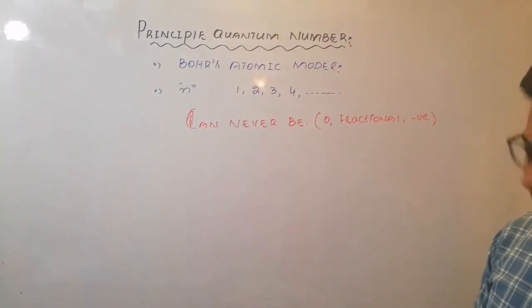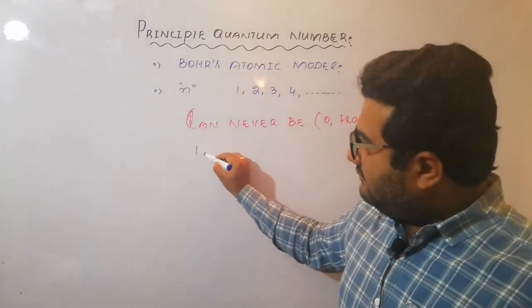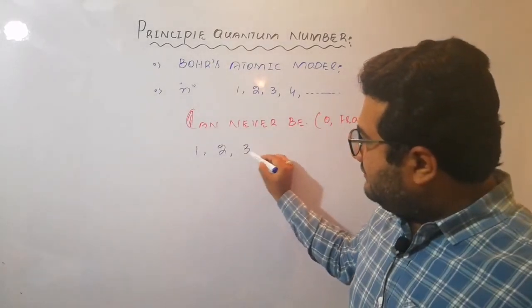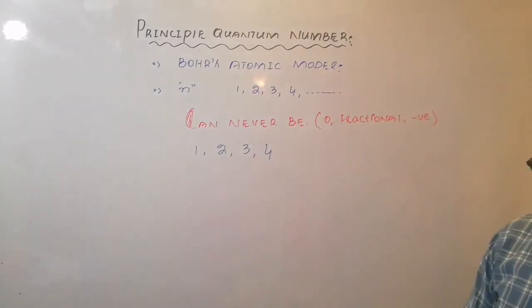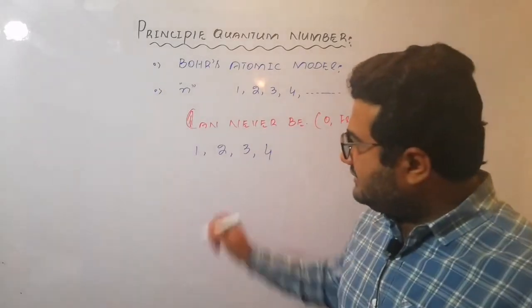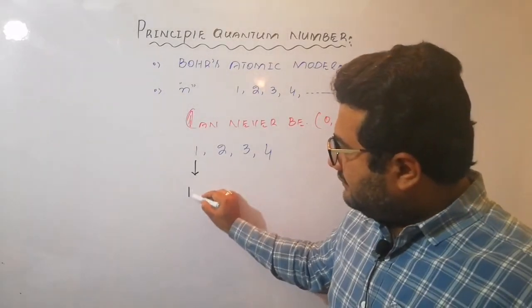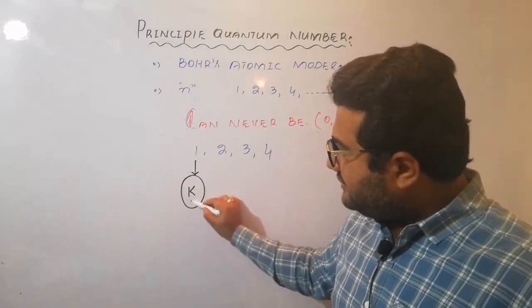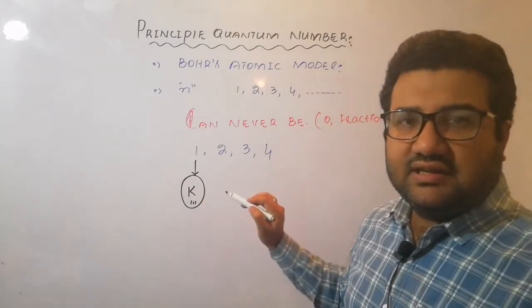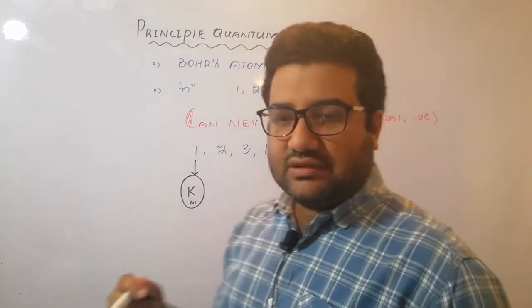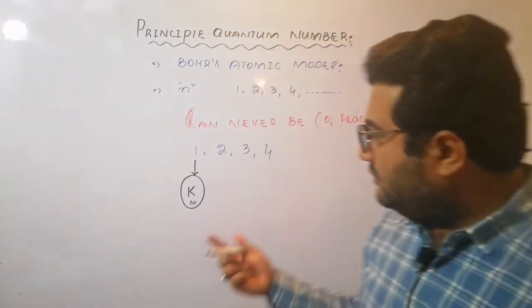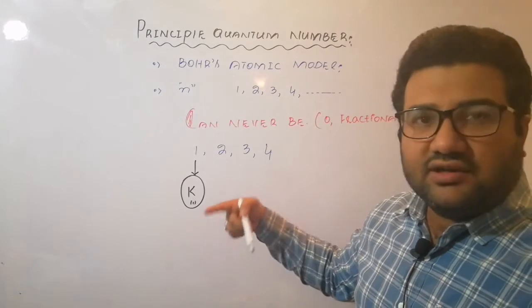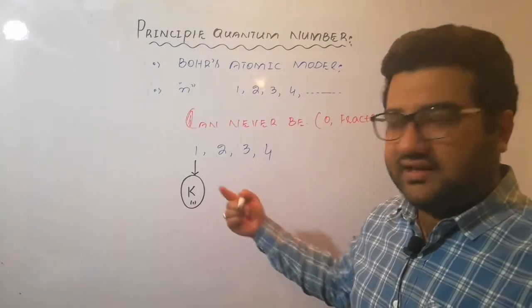Now what does the principal quantum number actually describe? I am taking just four values. If n equals 1, it means this is the first shell, that is the K shell. You know the shell is also called orbit or principal energy level. So K is a shell, it is an orbit, it is a principal energy level.